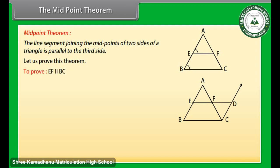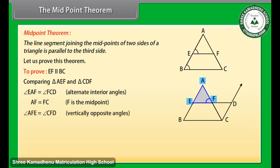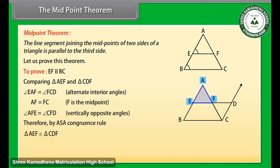We have to prove that EF is parallel to BC. Comparing triangle AEF and triangle CDF: angle EAF is equal to angle FCD because these are alternate interior angles; AF is equal to FC because F is the midpoint; and angle AFE is equal to angle CFD because these are vertically opposite angles. Therefore by ASA congruence rule, triangle AEF is congruent to triangle CDF. So EF is equal to DF and AE is equal to DC by CPCT.